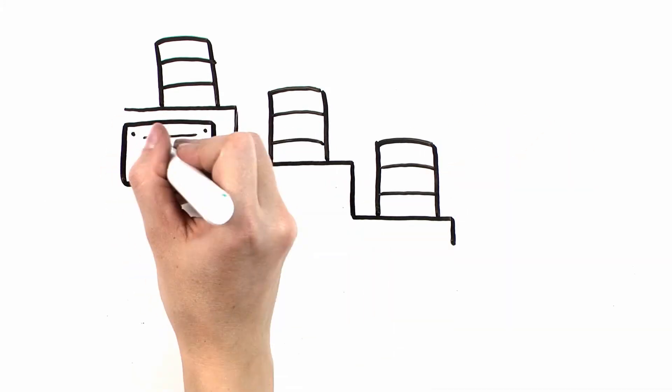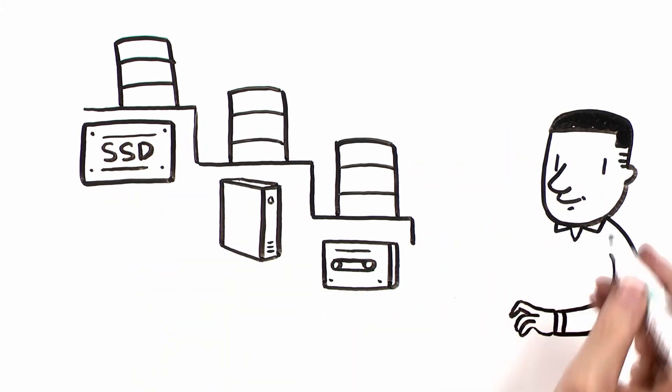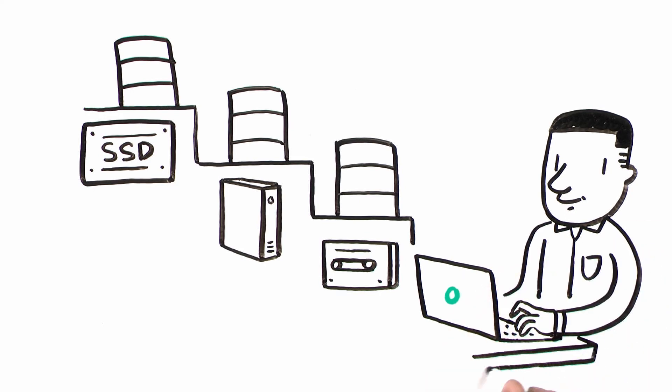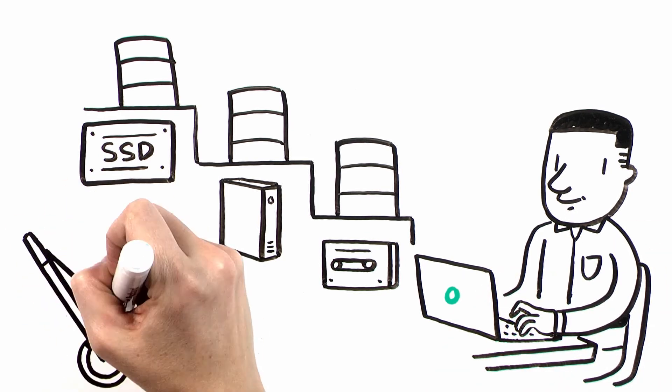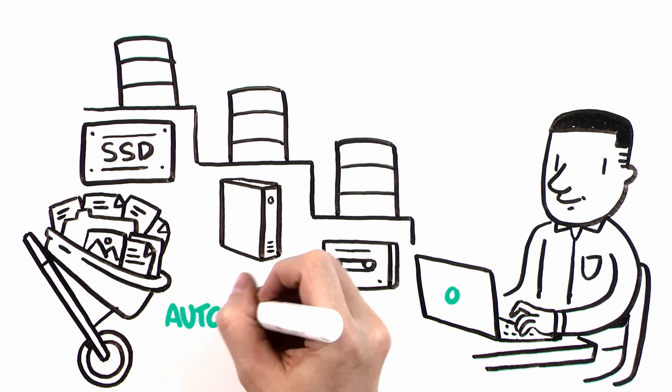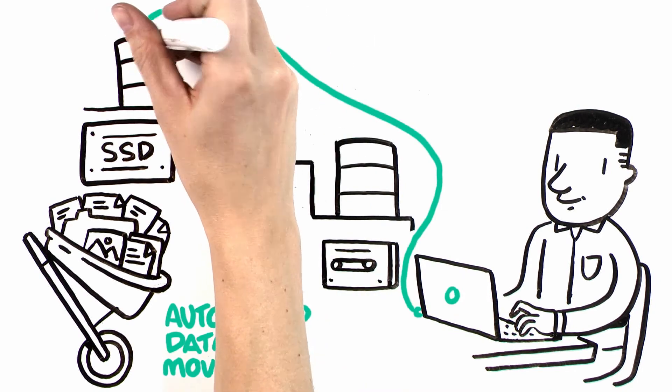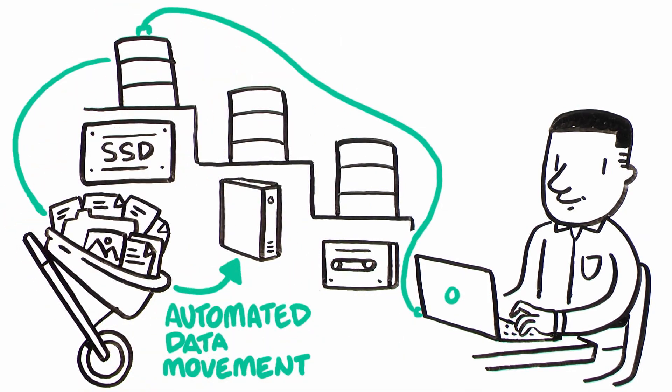DMF helps to manage the introduction of new storage technology over time. It can seamlessly manage the migration, validation, and movement of massive datasets to new storage infrastructure. Automated data movement can perform the migration behind the scenes with no impact to user or application data access.